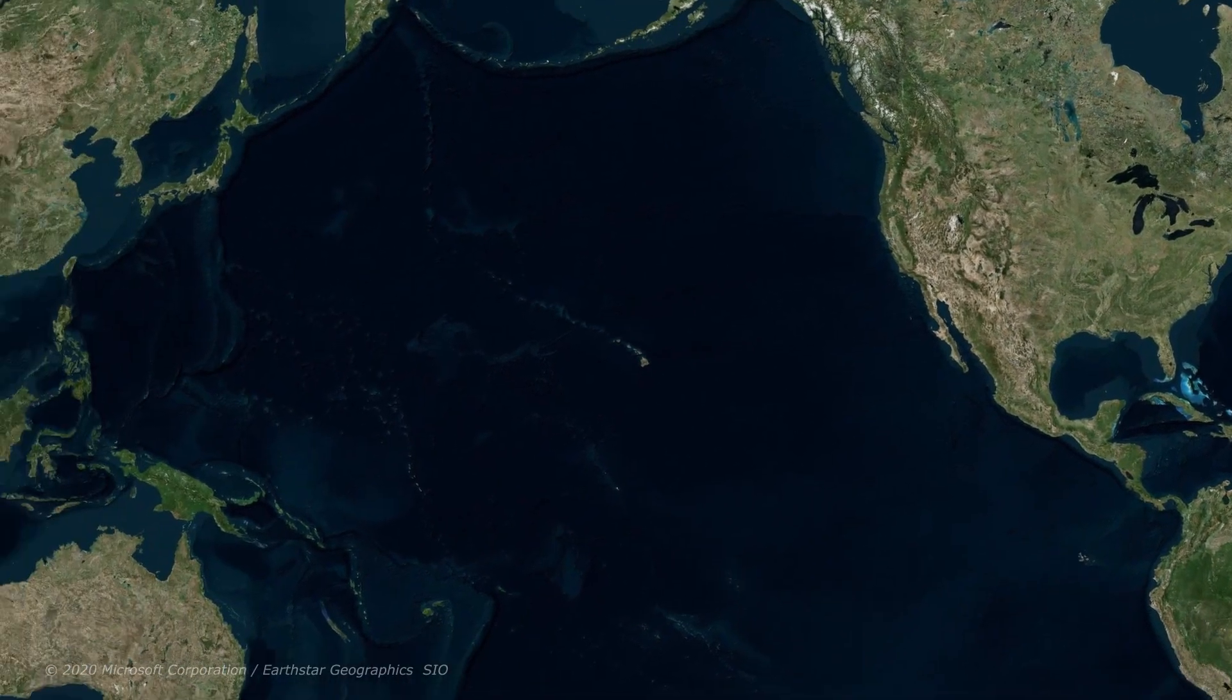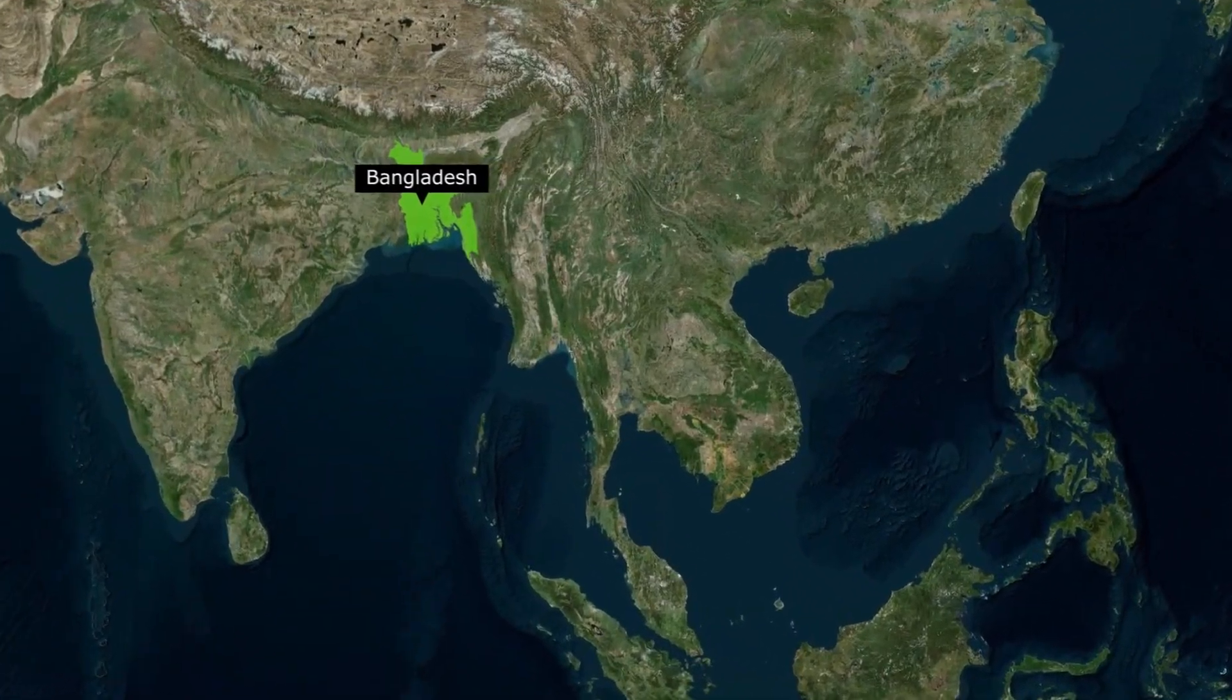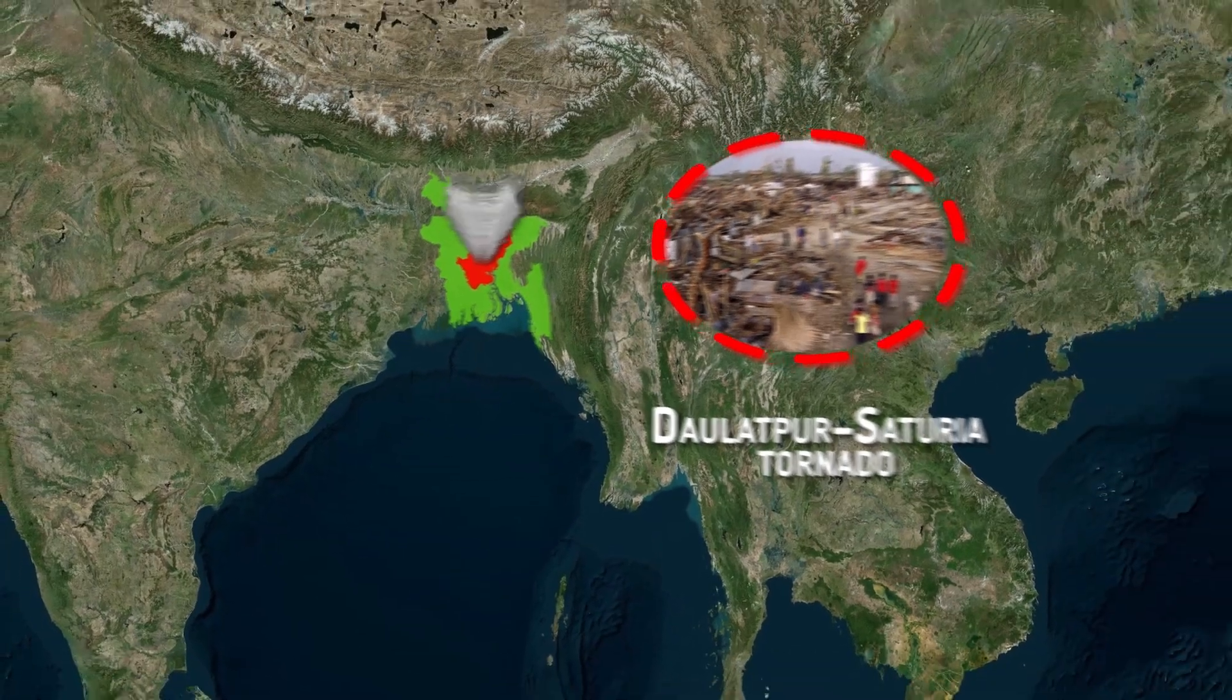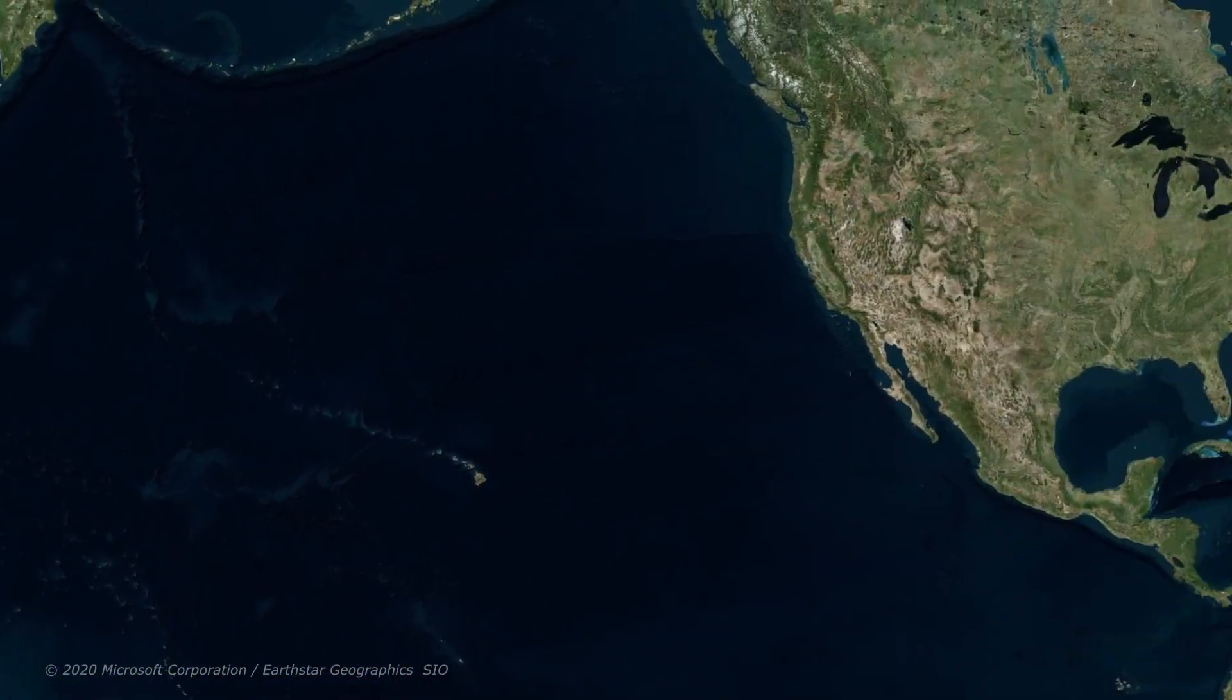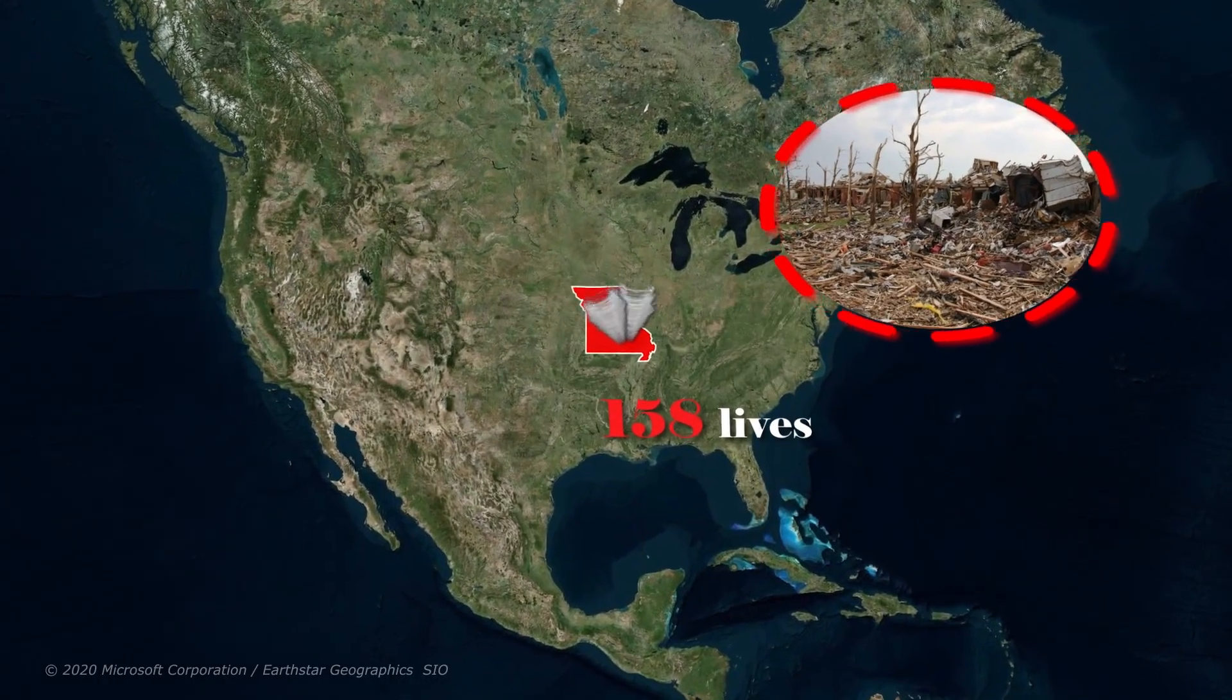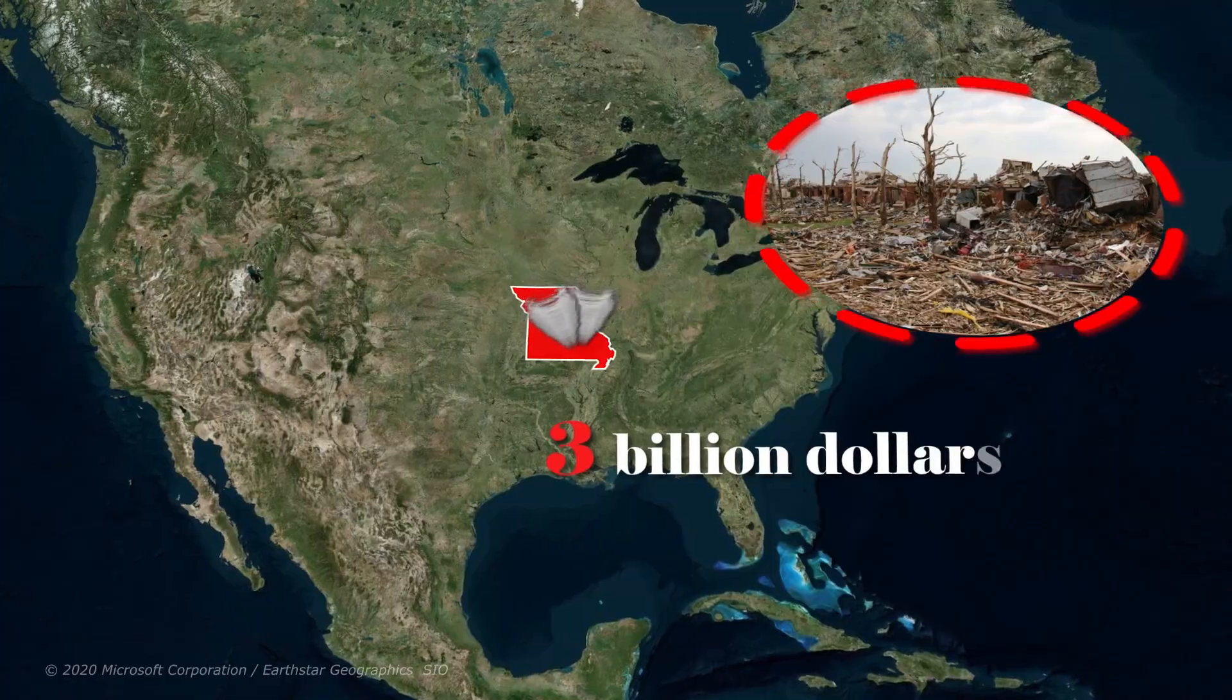The deadliest tornado to ever strike happened in Bangladesh in 1989. As many as 1,300 people are believed to have been killed in the Daulatpur-Saturia tornado. It was given an F4 ranking, and much of the death toll was due to the densely populated region where it occurred. In 2011, Missouri was hit by a multiple-vortex tornado which killed 158 people. It was also the costliest in U.S. history, with the damage bills coming to around $3 billion.